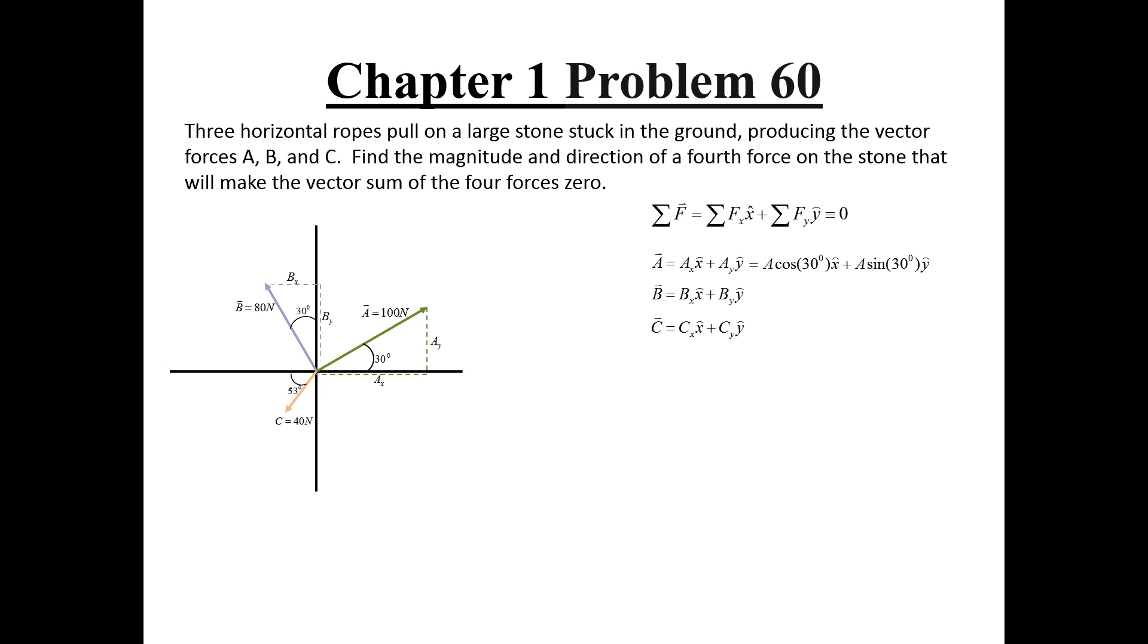B is in the second quadrant, so its x component is negative, but its y component is positive. Its x component is opposite to the angle that was given, so Bx is equal to the magnitude of B times the sine of 30 degrees, and its y component is adjacent and equals the magnitude of B times the cosine of 30 degrees.